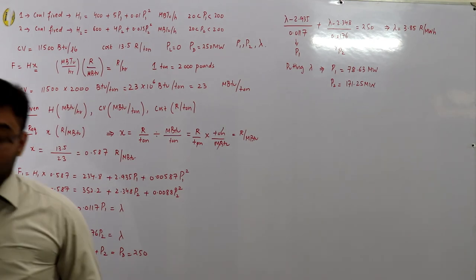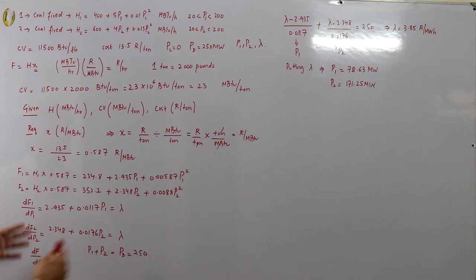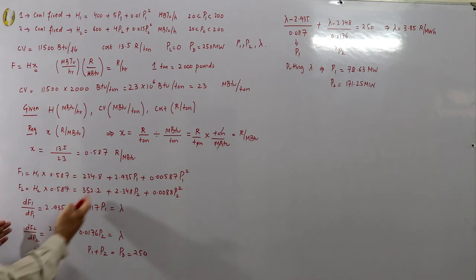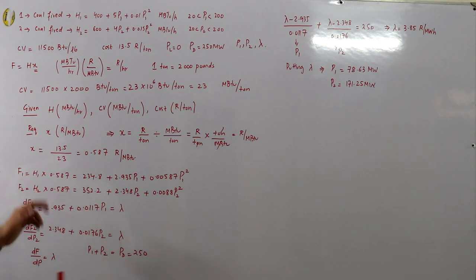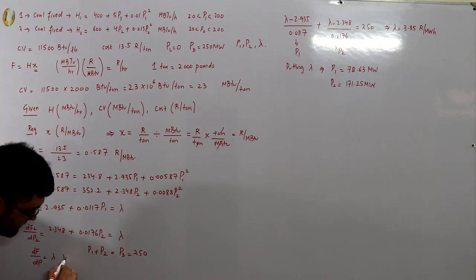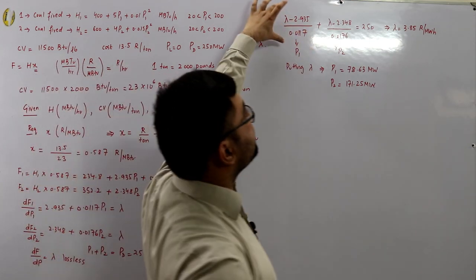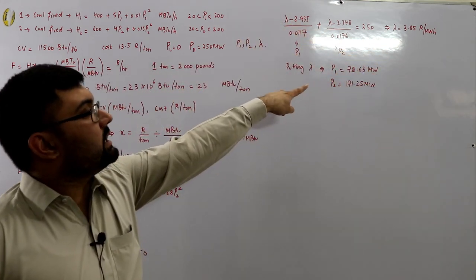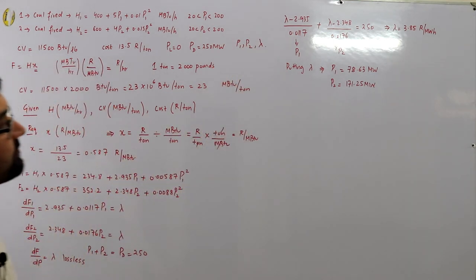There may be small calculation mistakes — please verify by yourself. The method is: take derivatives of f1 and f2, set them equal to lambda (since the system is lossless), enforce p1 + p2 = 250, solve for lambda, then find p1 and p2.